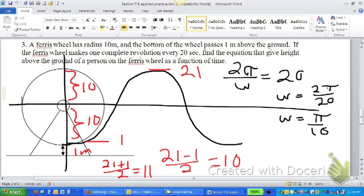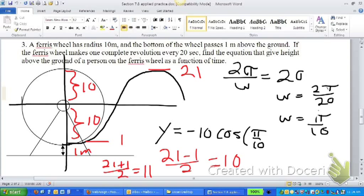So now I have my w based off my period, I have my amplitude, I have my vertical shift, I know it's a cosine function, I know it's reflected, now I can make my equation. So we'll say y equals negative 10 cosine of pi over 10x plus 11.